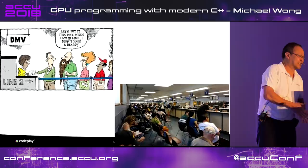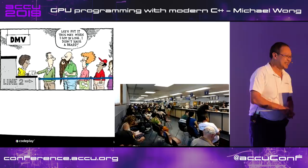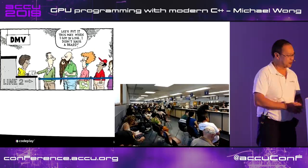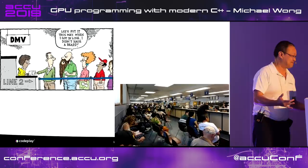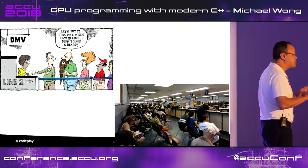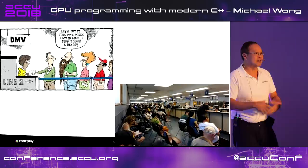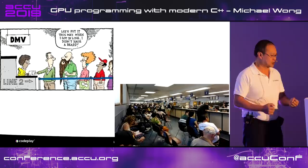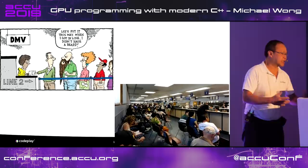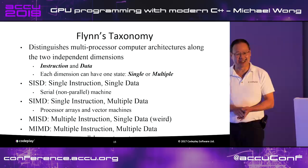CPUs are optimized for latency — they minimize the time per task. The DMV's goal is not your goal: they're optimizing for throughput, looking at the number of people served per day. They actually want long lines to keep their employees busy. This gives you an idea why CPUs and GPUs are designed differently — nearly on opposite ends of a spectrum. GPUs are optimized for throughput; they are like the DMV. In computer graphics, we care about pixels per second more than the latency of any one pixel.